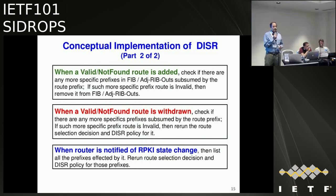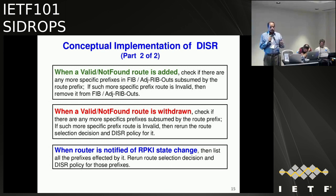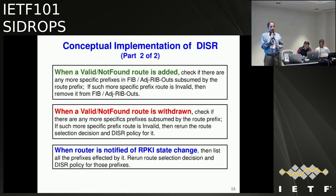You have to be careful about what happens when things change. When a valid or not-found route is added, you have to check if there are more-specific prefixes in the FIB or ad-rib-out subsumed by the route prefix. If those more-specific prefix routes are invalid, you need to remove them, because the newly added valid/not-found route covers it. Likewise, when a valid or not-found route is withdrawn, you also have to perform checks. Or when there are changes in the RPKI state — once again, you need to redo the checks. That's the high-level conceptual implementation.